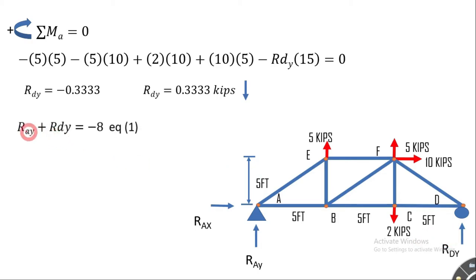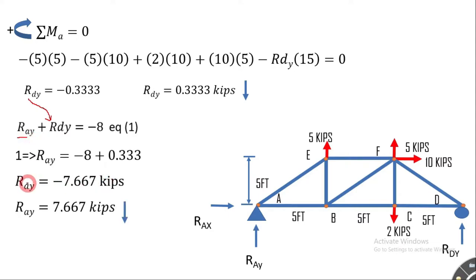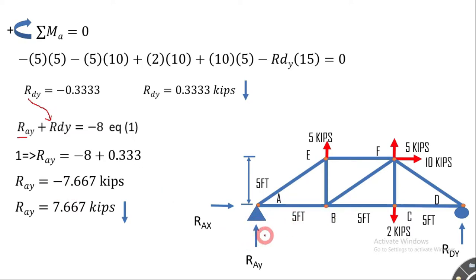From applying ΣFy equilibrium, we substitute to solve for RDy. RAy is calculated as −7.667 kips. The negative sign indicates the assumed direction for RAy was incorrect — it should be pointing downward.